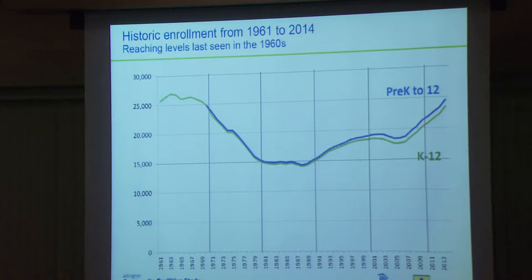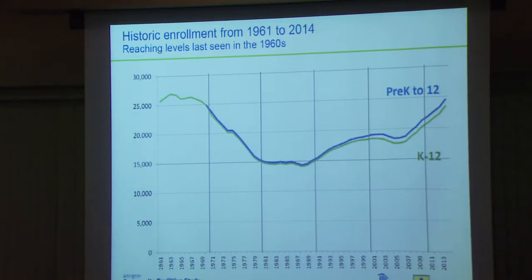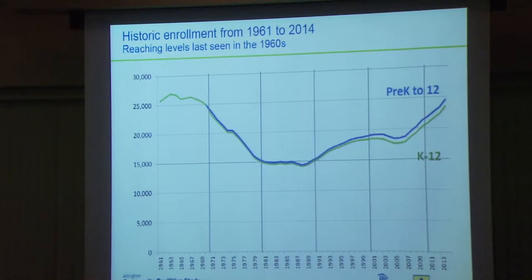Looking at the 70s, we see that enrollment declined dramatically — from about 24,000 down to a little below 15,000, a decrease of about 10,000 students over a decade. In the 80s, enrollment kind of flattened out, hovering around 15,000 students. Then in the 90s we see a gradual increase, sloping upward. Followed by 2000, a little dip around 2007 during the Great Recession, and then explosion.